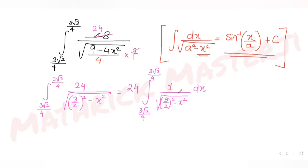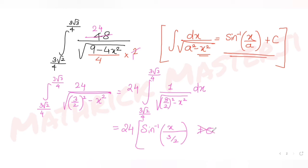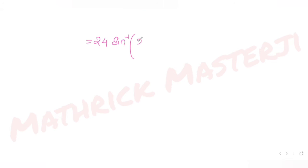Now applying the general formula with a = 3/2, I can write this as 24·sin⁻¹(x / (3/2)), which simplifies to 24·sin⁻¹(2x/3), evaluated at the limits 3√3/4 and 3√2/4.